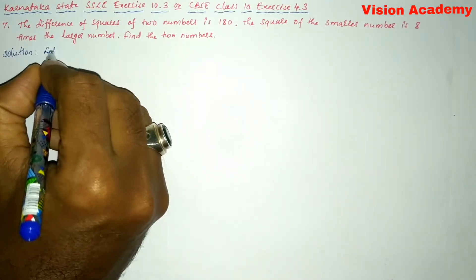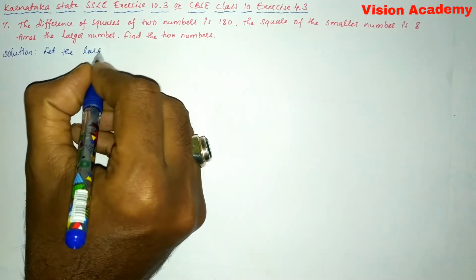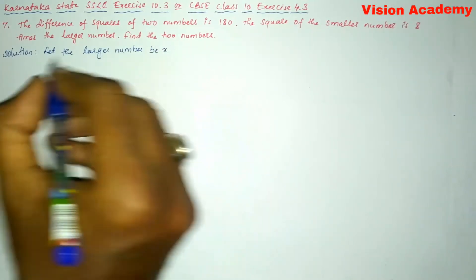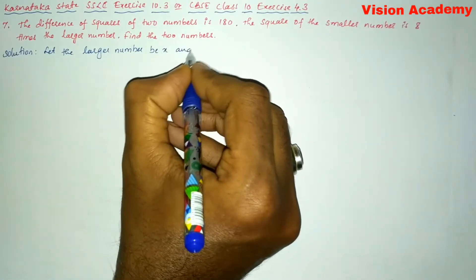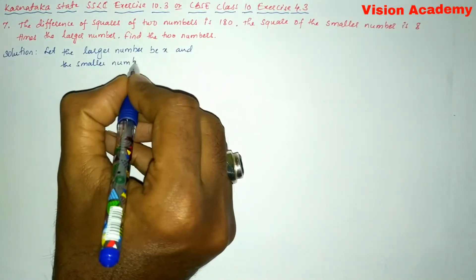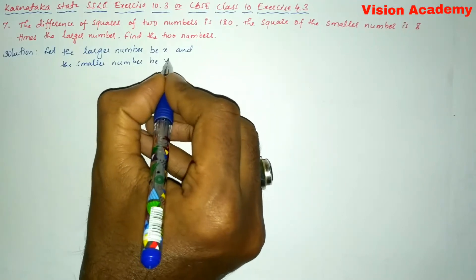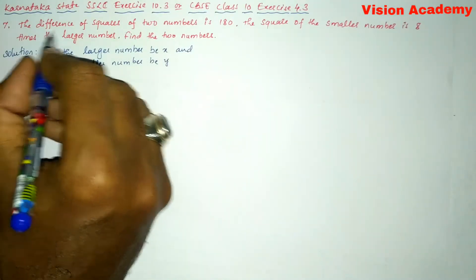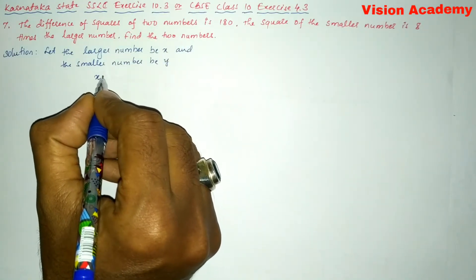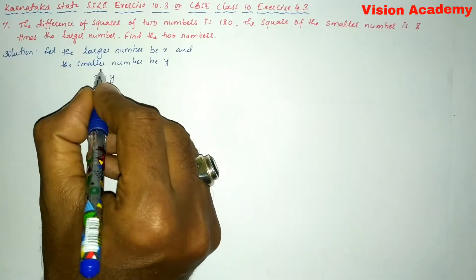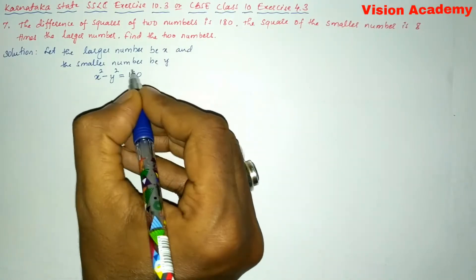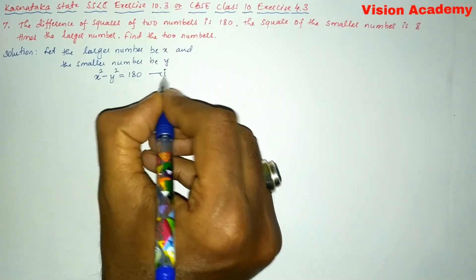Let the larger number be x and the smaller number be y. Here they have given the difference of squares of two numbers is 180. So x² - y² = 180. Let us consider this one as equation number one.